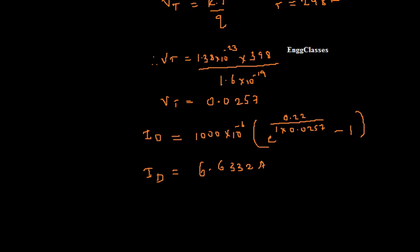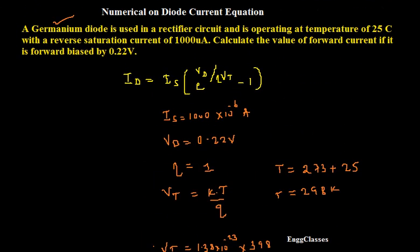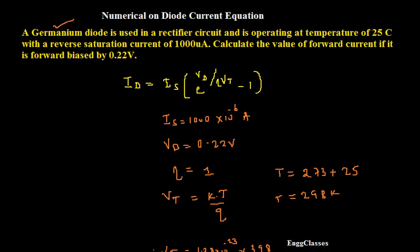This is how we solve a numerical on the diode current equation. I hope you have understood. If there are any doubts, please let me know in the comment section. Meanwhile subscribe to our channel NG Classes for more videos on basic electronics. Thank you everyone for watching.